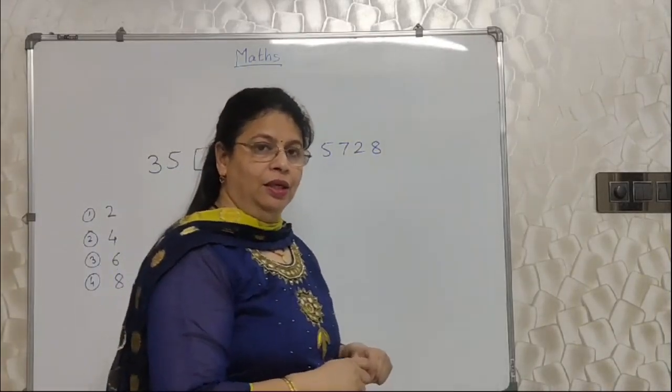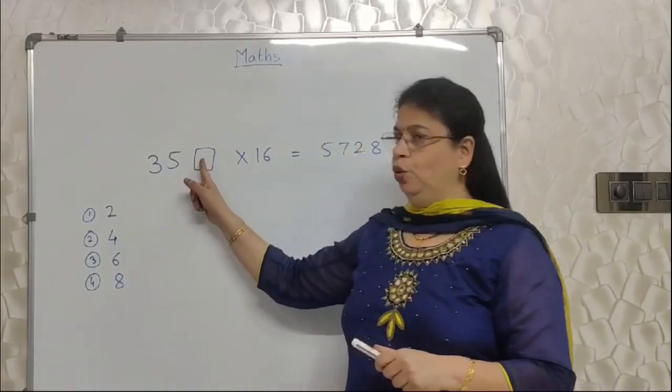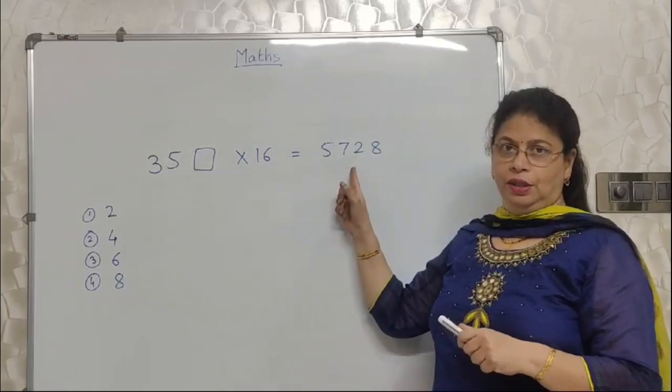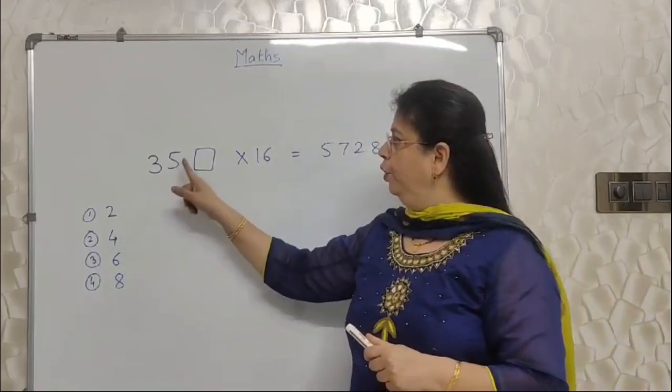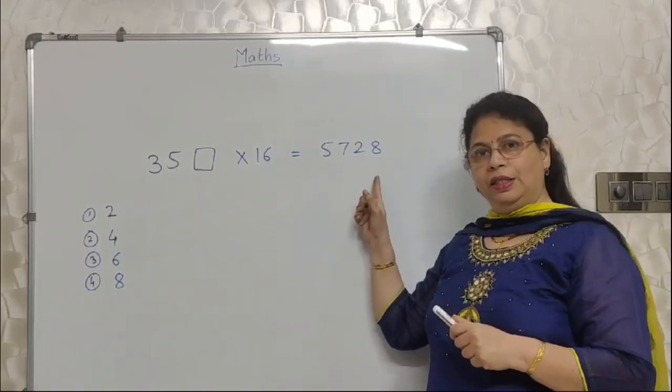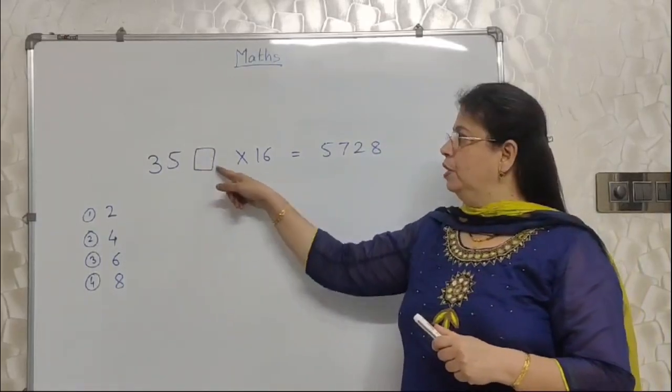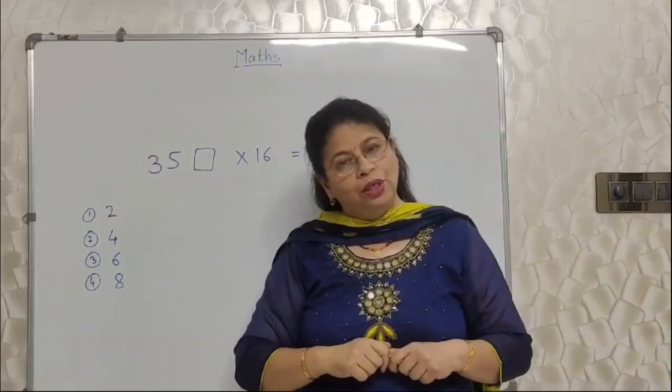After saying this, what are you supposed to do? Fill up this with 2 first. 352 into 16. You have to see whether the multiplication is this. If answer is no, then write 4 here. And then again do multiplication. And then see whether the answer is this. If no, then 6, 356 into 16. Then see whether you are getting this.